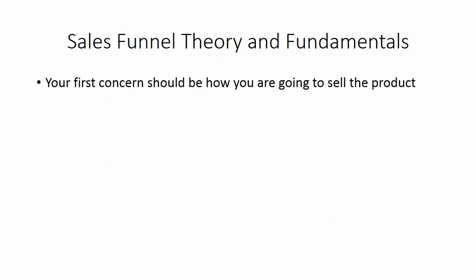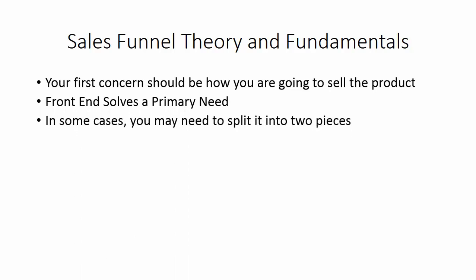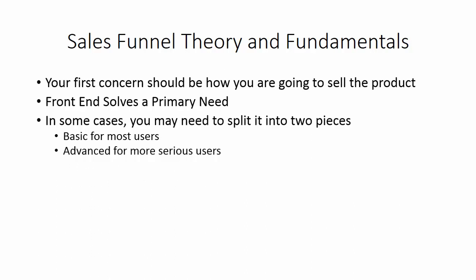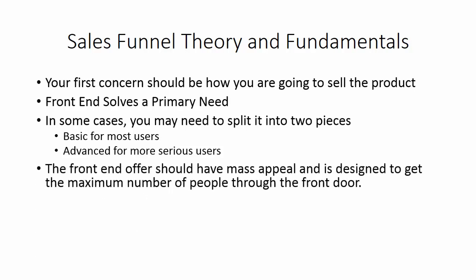Your first concern should be how you're going to sell the product. The front end product should solve a primary need. In some cases you may need to split that product into two pieces — one in the front end and one in the back end. The basic level will be for most users, which is the solution that has the most mass appeal. The advanced section should be for more serious users, and that's what your upsell will go into. The front end offer should have mass appeal and is designed to get the maximum number of people through the front door.